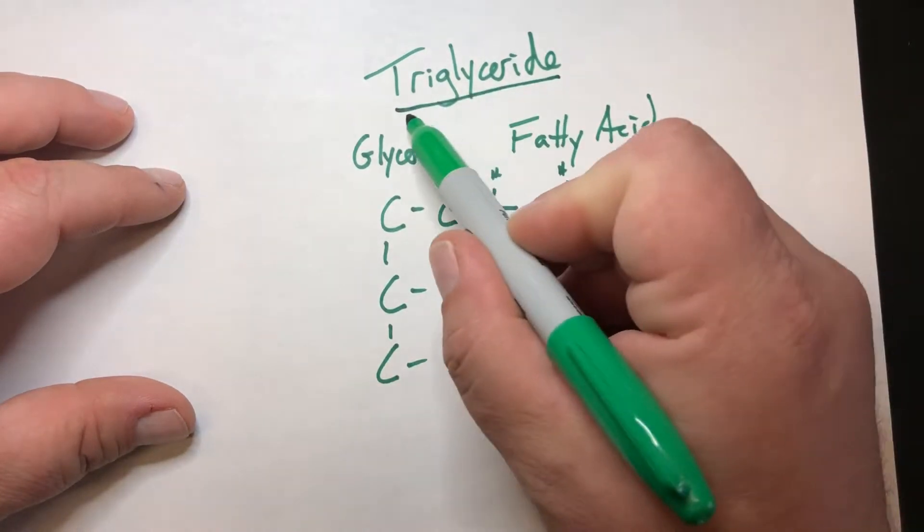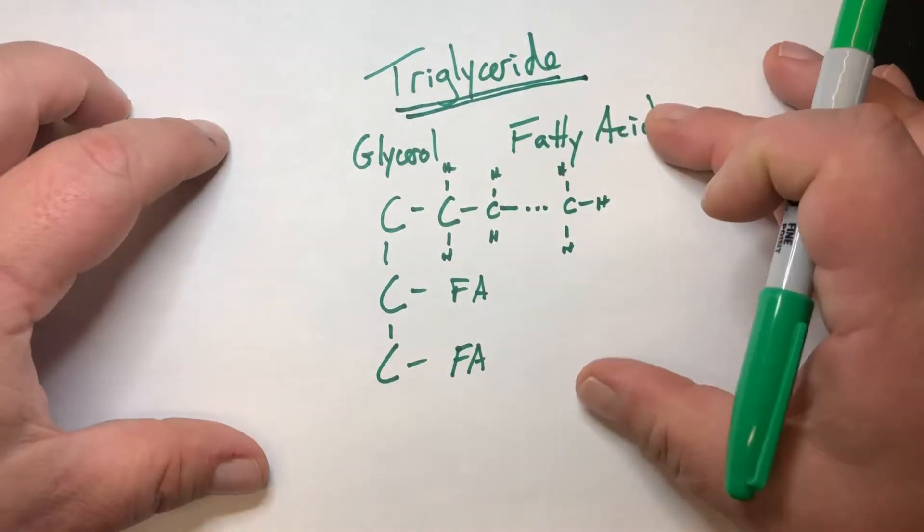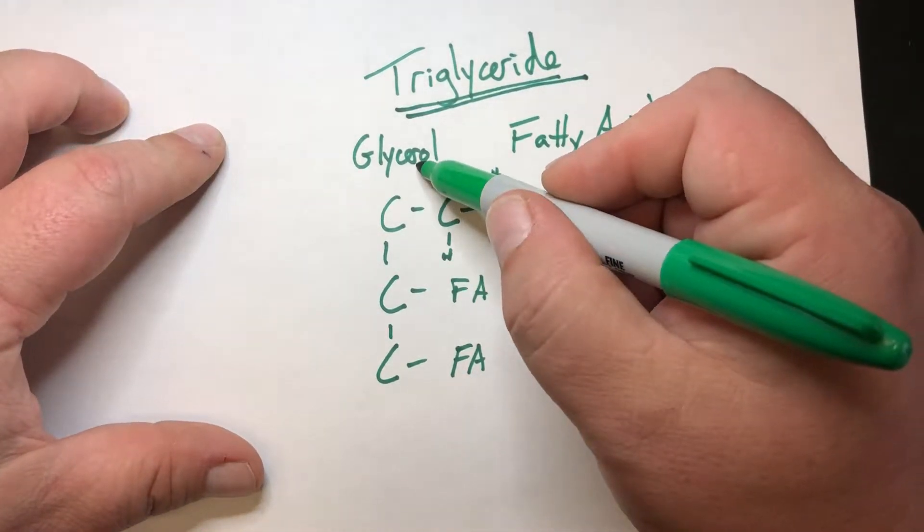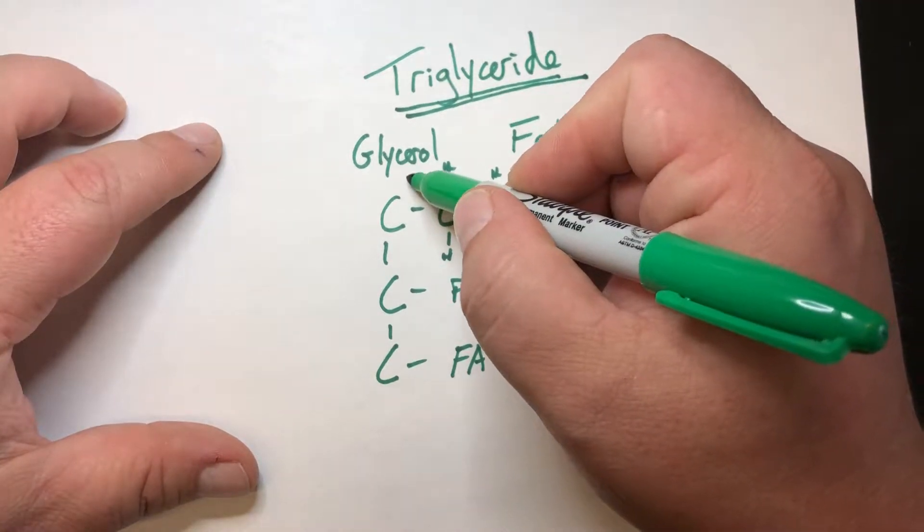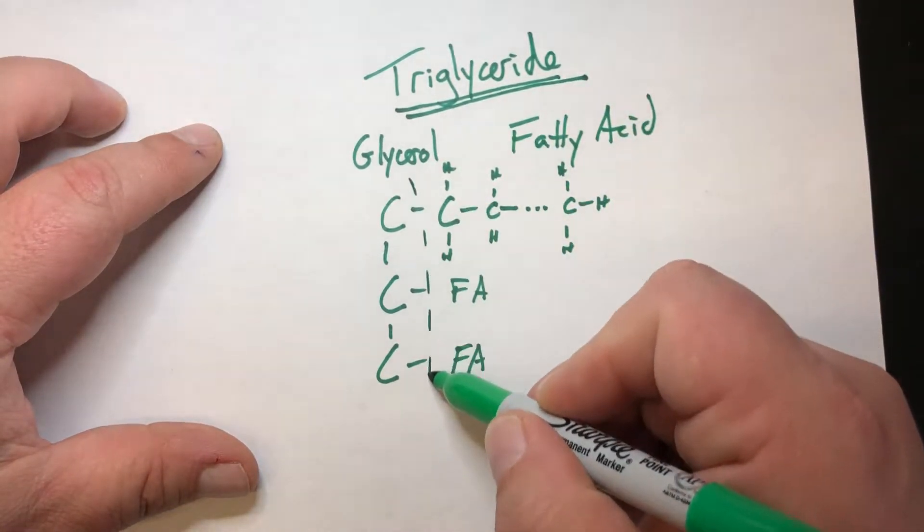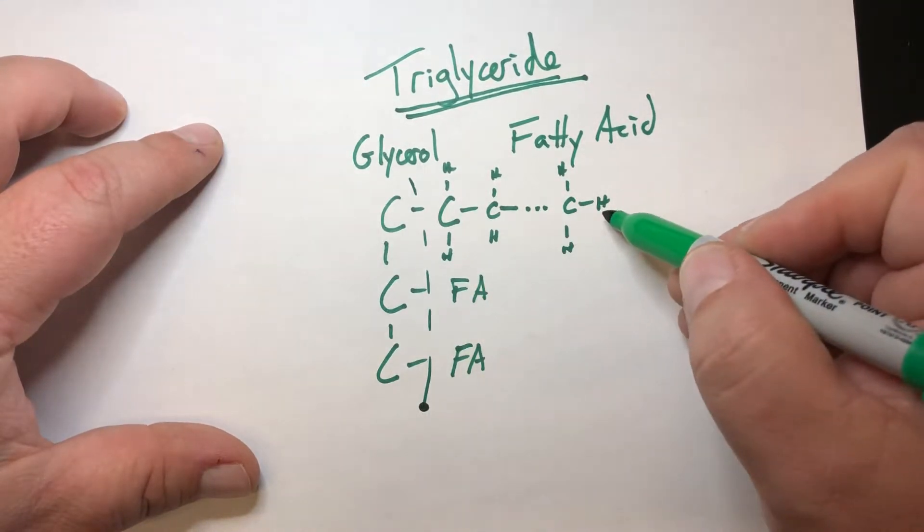With triglyceride metabolism, the first step as we look at the triglyceride is we have the two parts, the glycerol and then we have the three fatty acids. The glycerol is a three carbon chain molecule. So we split that glycerol off from the three fatty acids.